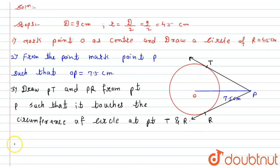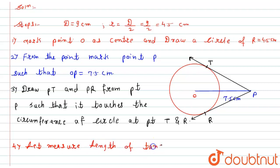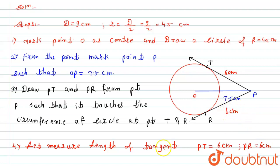Step four: measure the length of the tangents. Using a scale, the length of PT equals 6 centimeters, and similarly the length of PR also equals 6 centimeters. This is the required solution for this question.